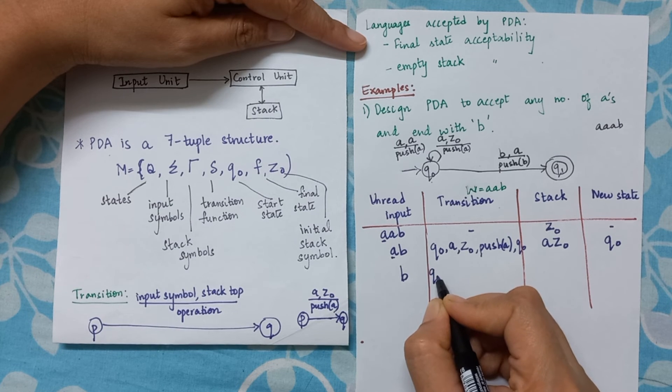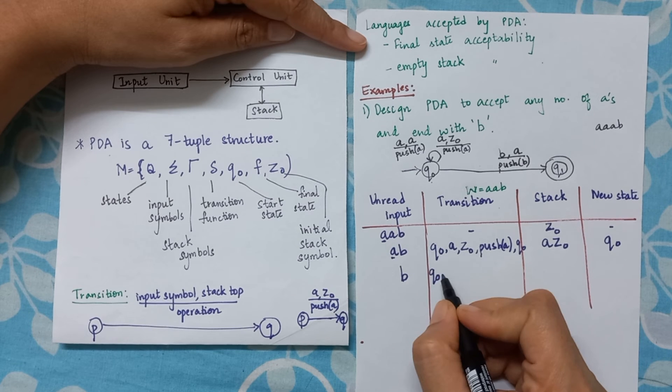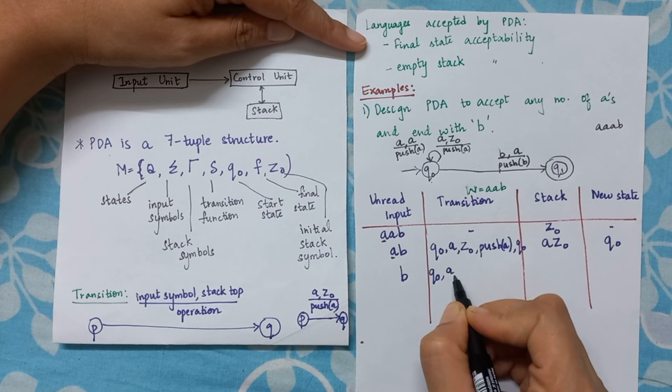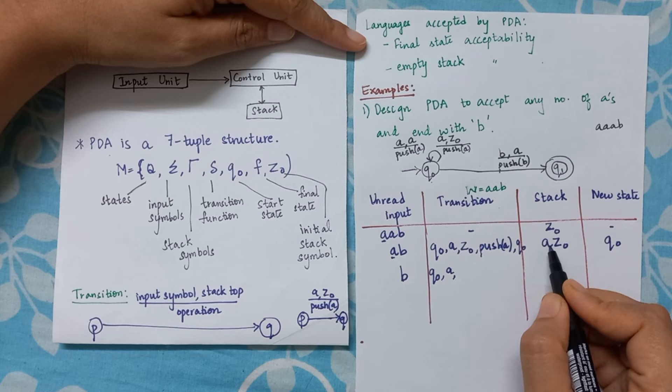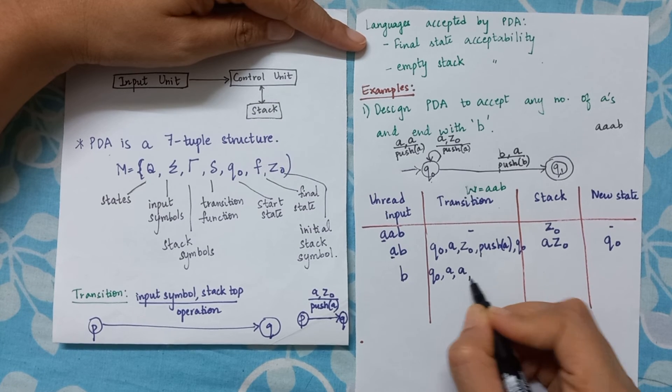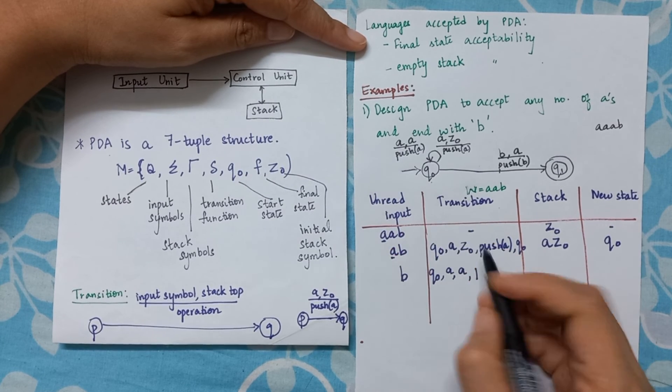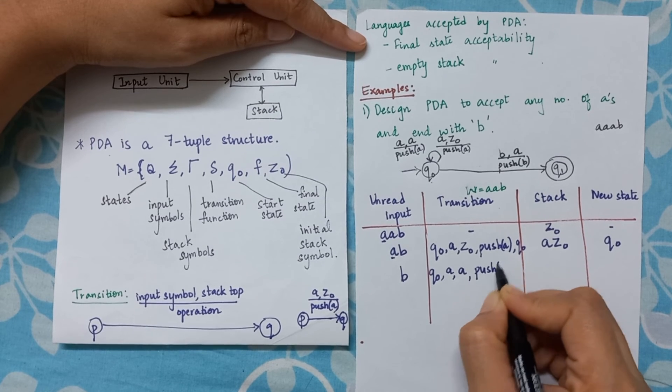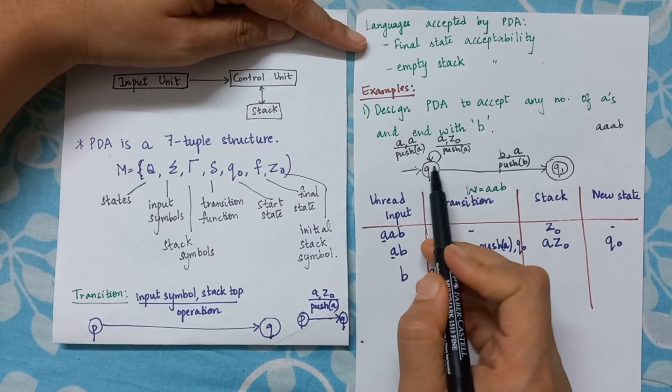What is my top stack symbol? Small 'a'. What should I do with that? I should push it onto the stack. Which state do I land up in? Again q0.